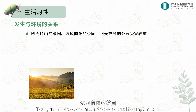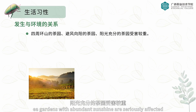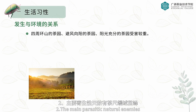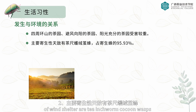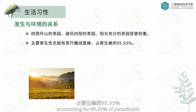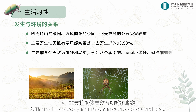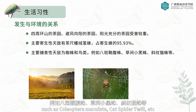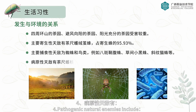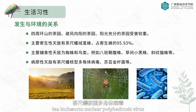Regarding the relationship between insect pest occurrence and the environment: tea gardens surrounded by mountains, sheltered from the wind and facing the sun, with abundant sunshine, are seriously affected. The main parasitic natural enemies are tea inchworm cocoon wasps, accounting for 95.93% of parasitoids. The main predatory natural enemies are spiders and birds such as Coleoptera maculata, cat spider, and twill. Pathogenic natural enemies include tea inchworm nuclear polyhedrosis virus and Bacillus thuringiensis.